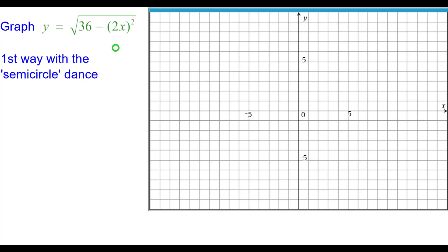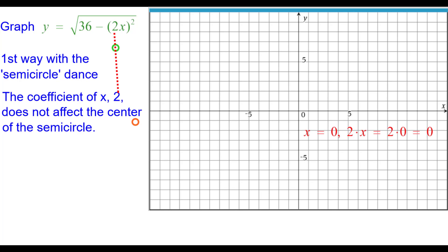The first way is with what we call the semicircle dance. The coefficient of x, which is 2, does not affect the center of the semicircle, which is normally at the origin. Because when x is equal to 0, 2 times x is also equal to 0.